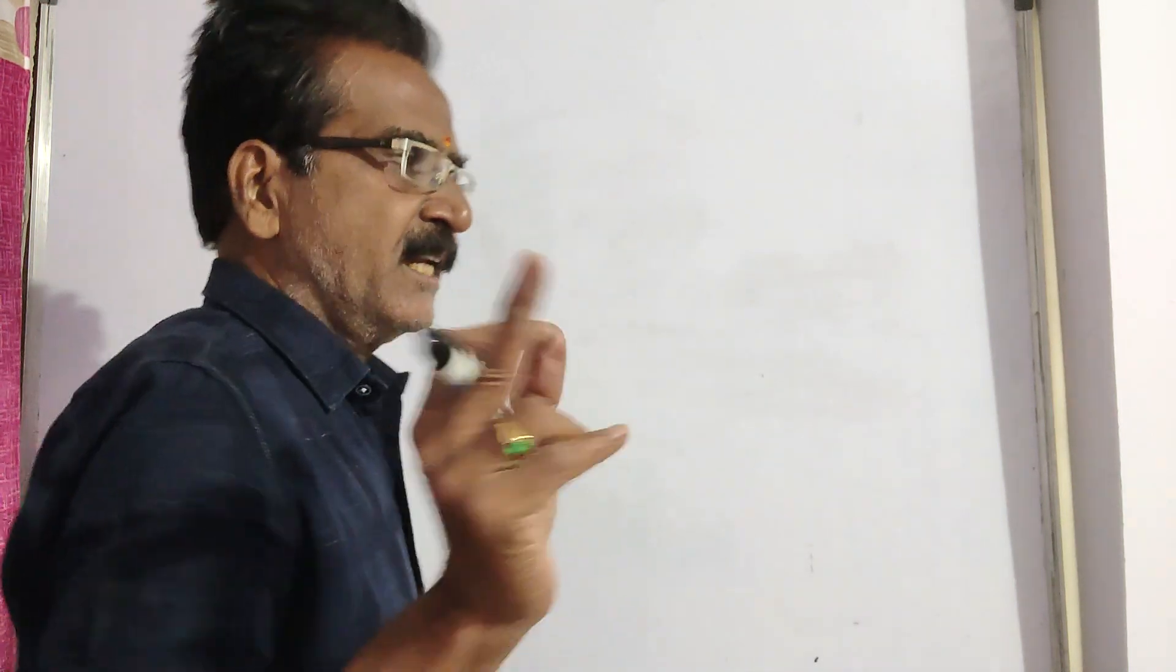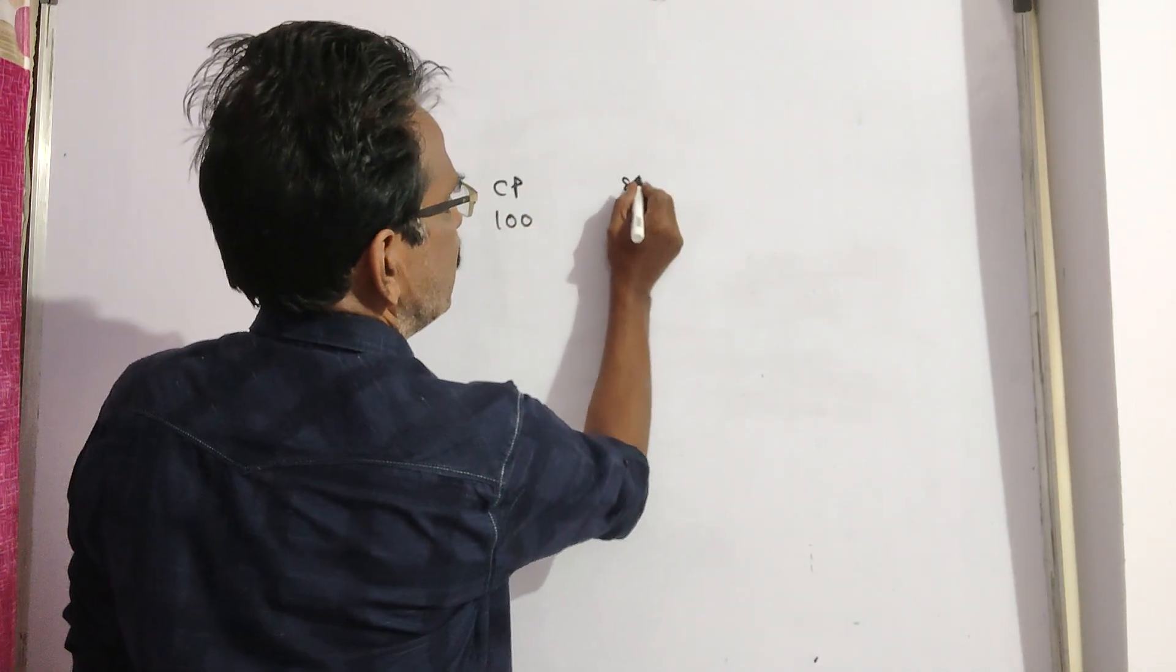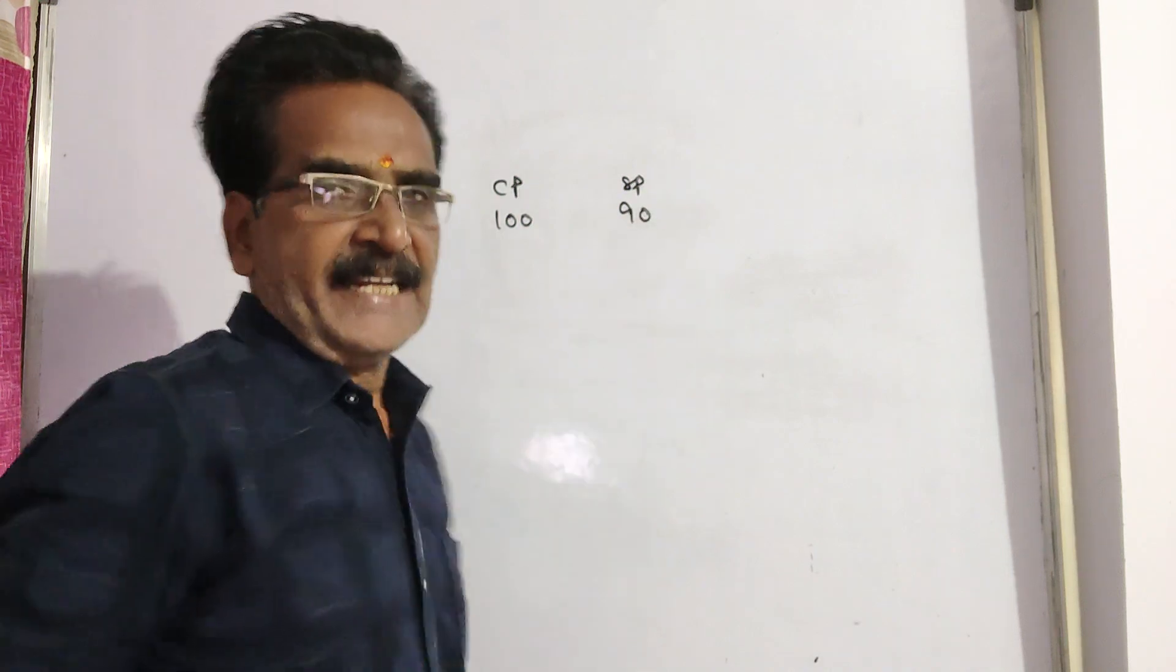A man bought an article and sold it at a loss of 10%. Sold it at a loss of 10% means if cost price is 100, then the selling price will be 90.